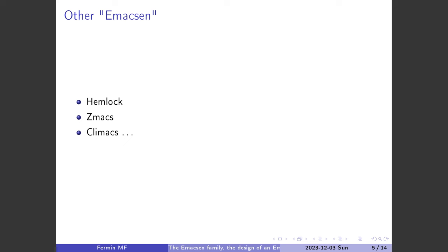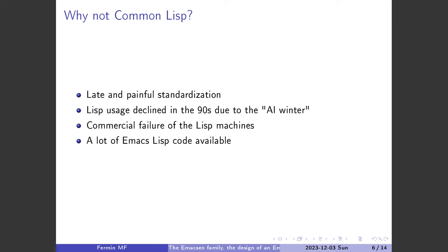All three failed for different reasons. ZetaMax failed because of the Lisp machine market crash. So Emacs was left alone. In the 90s, some people suggested that now that we have a standard language — Common Lisp was standardized in 1994 — why not change Emacs Lisp to Common Lisp?